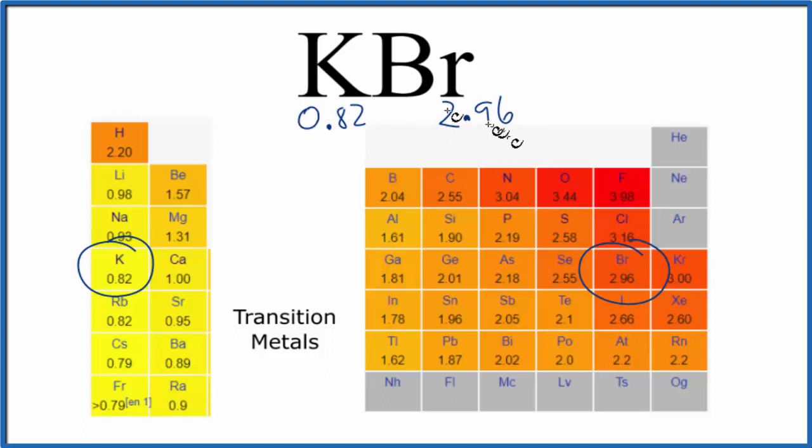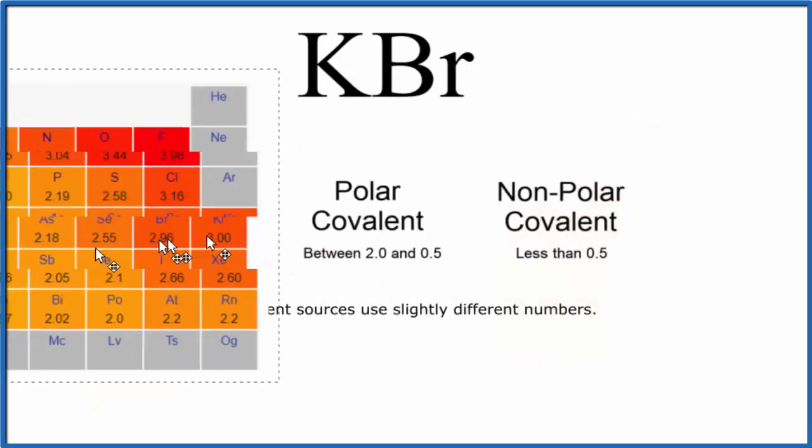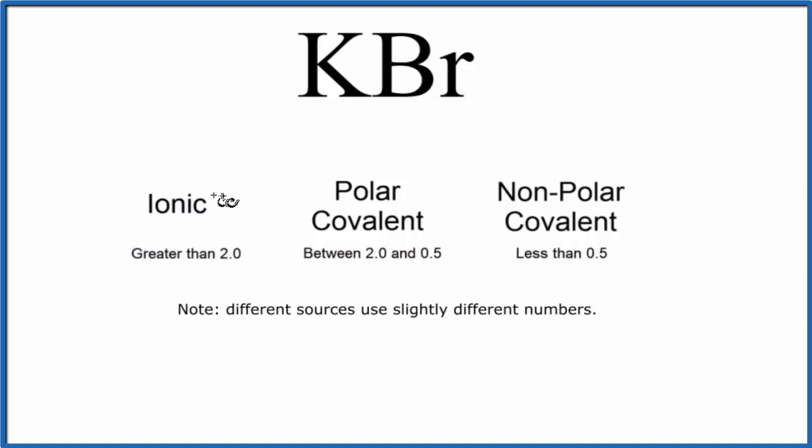So since the difference between these numbers is greater than two, you subtract 0.82 from 2.96, that's greater than two. That means that KBr, potassium bromide, will be an ionic compound.